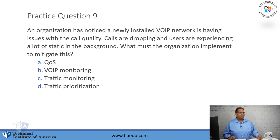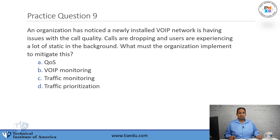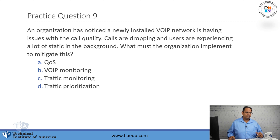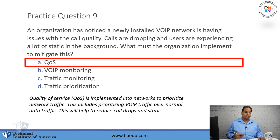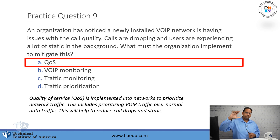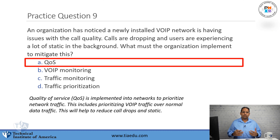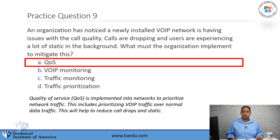Practice question number nine: An organization has noticed a newly installed VoIP network is having issues with call quality. Calls are dropping and users are experiencing a lot of static. What must the organization implement to mitigate this? A. QoS. B. VoIP monitoring. C. Traffic monitoring. D. Traffic prioritization. The answer is QoS. If you have a VoIP network, you want to implement QoS because it prioritizes network traffic. You don't want data and voice traffic contending for the same physical line, because VoIP traffic is based on UDP and plays as it's received — so without prioritization, you get dropped calls or static.